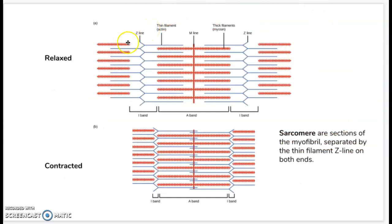Here is a visual representation of the actin and the myosin. The actin, or thin filament, is represented by the thin blue line, and the thick filaments, or myosin, are represented by the thick red lines. When the myosin binds to the actin and then releases the ADP and shifts over, it causes the muscles to contract.